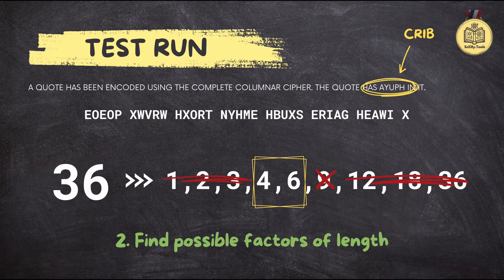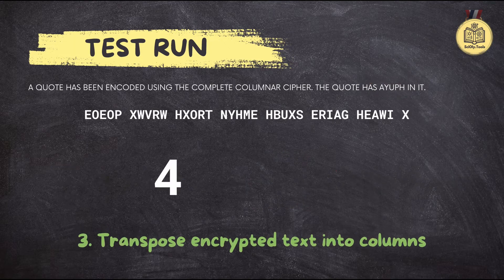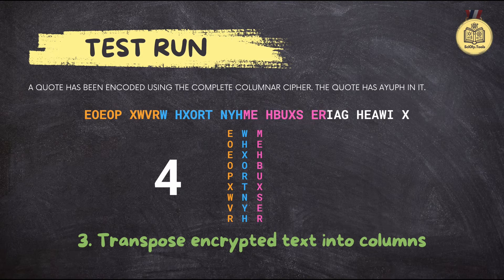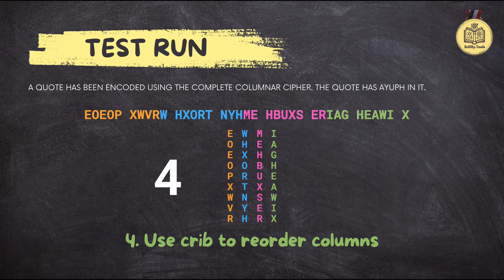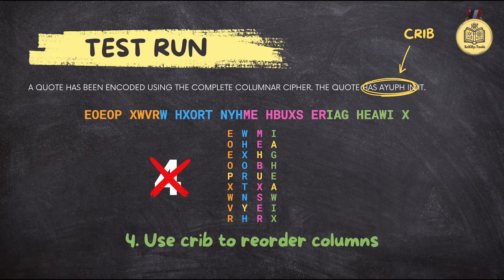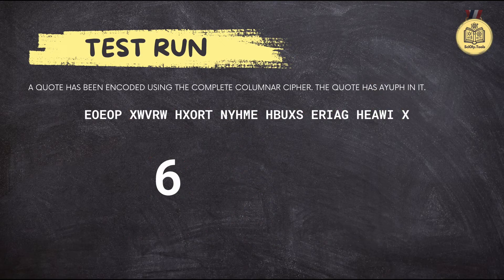We've got our potential column counts — time to arrange the letters. Let's try 4 columns first. If we divide 36 letters into 4 columns, each one will have 9 letters. Do you see your crib — A-Y-U-P-H — all in one row? I'm looking and I don't see it; the letters are all over the place. Okay, that means we need to go back and try a different column count. It's all part of the process — back to the drawing board.